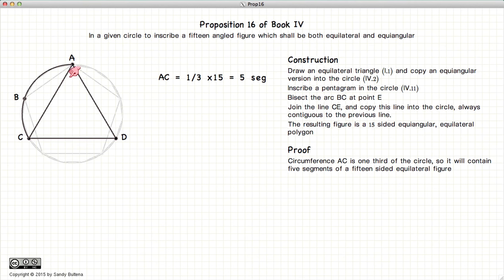And by doing that, we can say that the circumference AC is equal to one third of the circle. So if we had our 15-segmented polygon, this would contain five segments.